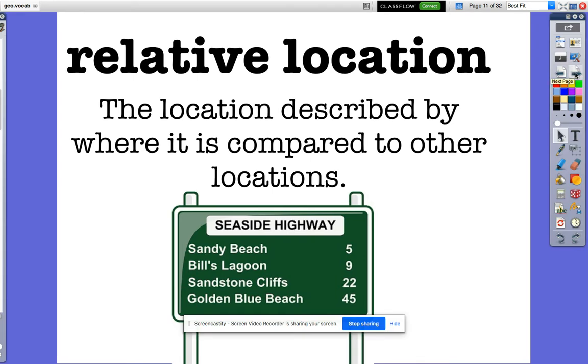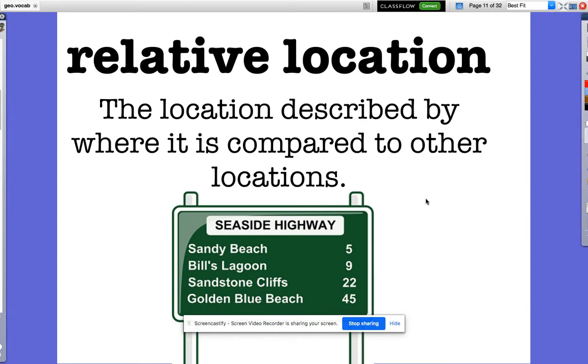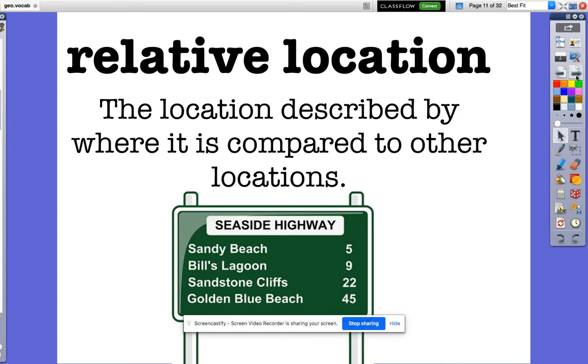Our next word is relative location: the location described by where it is compared to other locations. Relative to other locations means we would say Ray's Supermarket is just down the street from Moncure School. That's relative location.